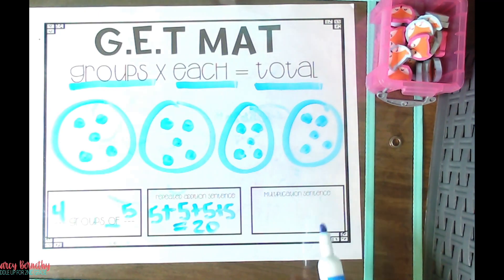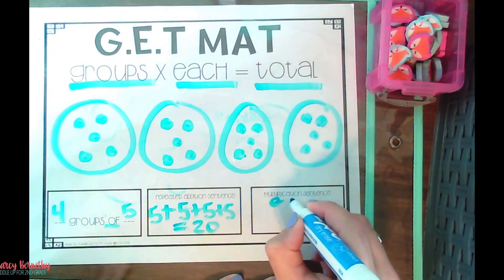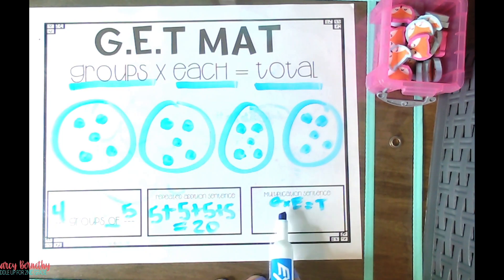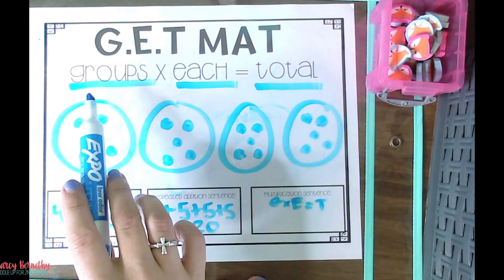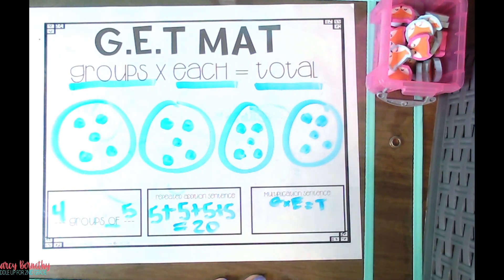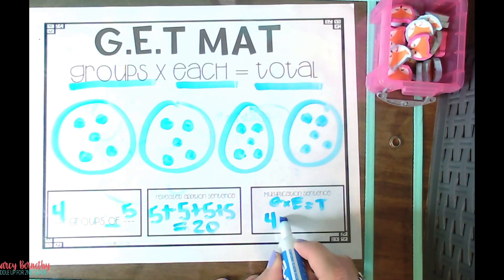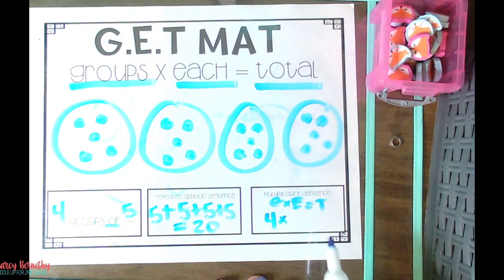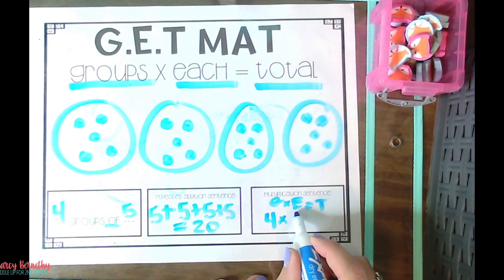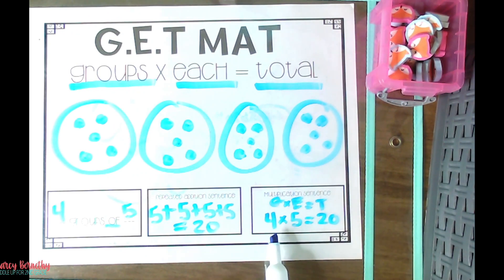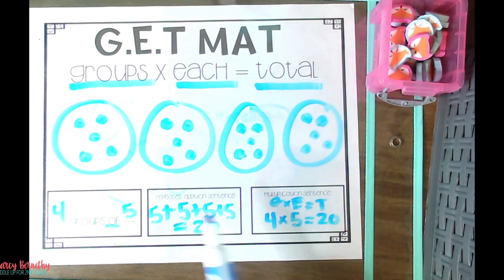This is when they think things get really cool. I have them write out G times E equals T — groups times each equals total. So I say, how many groups did we draw? Groups are represented by circles, there were four of them, so we write a four under the G. Then they get to write a times symbol — a multiplication symbol. Now groups times each: what number represents how many are in each group? Five. So four times five equals twenty, because we added the number five four times.